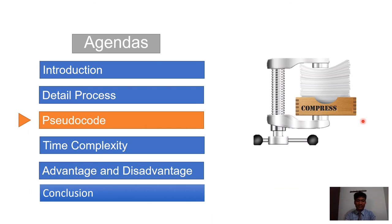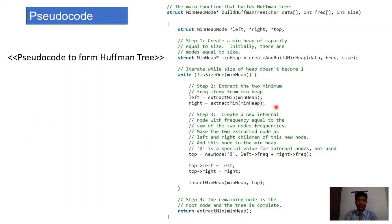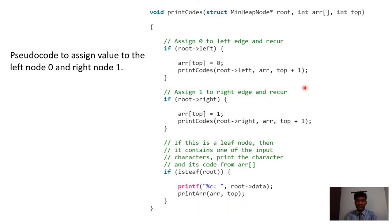Now, the pseudo code. The main function of the Huffman tree builds the Huffman tree and takes 3 parameters: data, frequency, and size. It creates a min heap and calls the build function. This function iterates again and again until the size of the heap becomes 1. The pseudo code also assigns 0 to the left node and 1 to the right node.